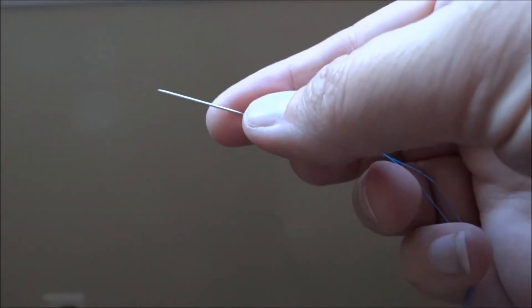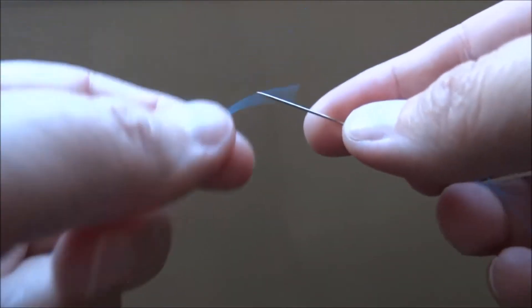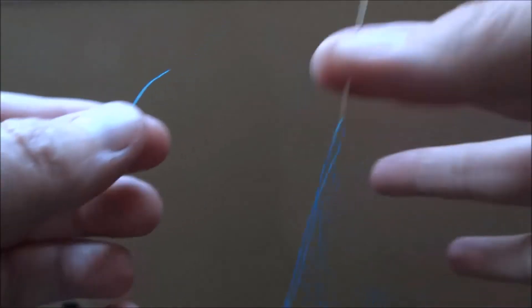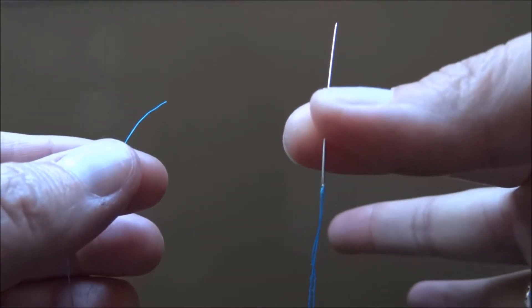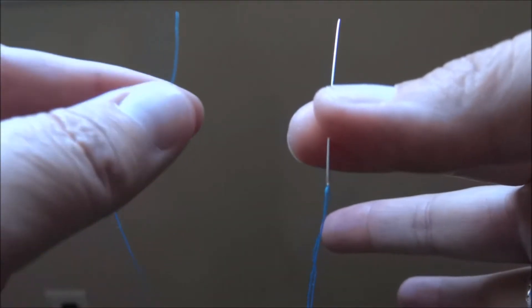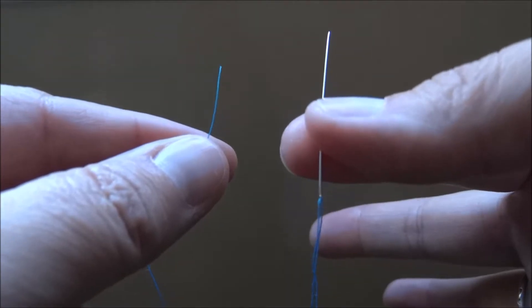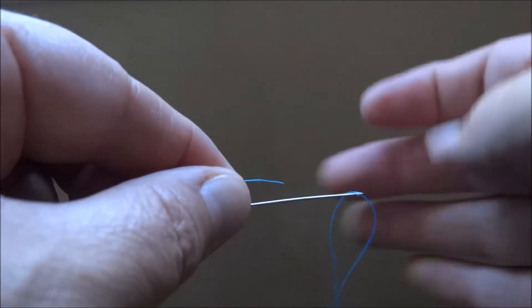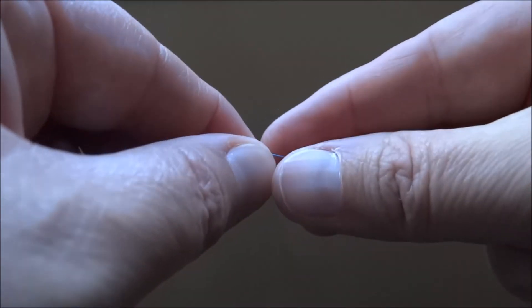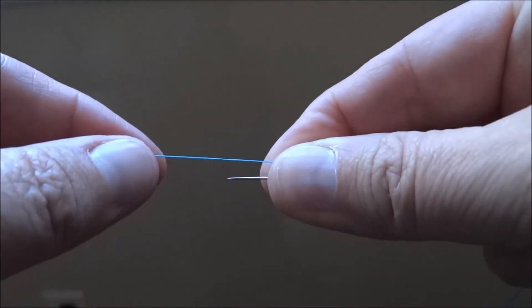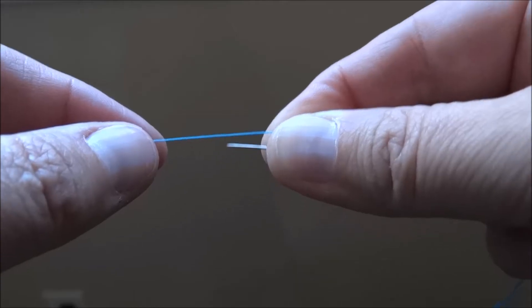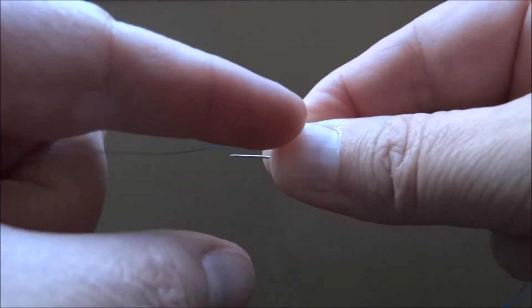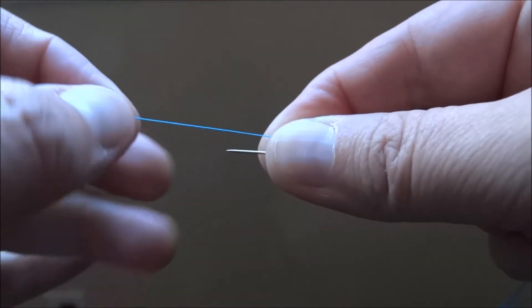So here we go. You've got your needle and your thread in one hand and the end of the thread in the other. What you're going to do is line these up so your needle and thread are aligned. You've got your thread pinched in your finger here, kind of pulling it a little taut.